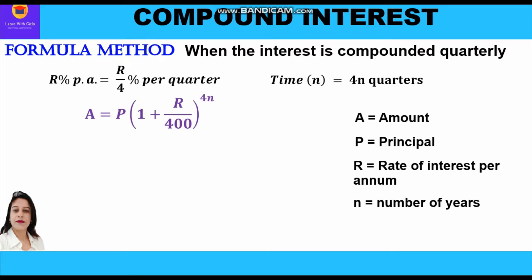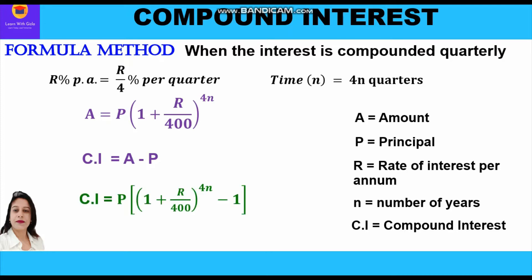There will be changes in the formula. The formula for amount becomes A = P(1 + r/400)^(4n). The CI formula remains CI = A - P, and the direct formula also changes to CI = P[(1 + r/400)^(4n) - 1]. Either formula can be used depending on what is asked and what is given.